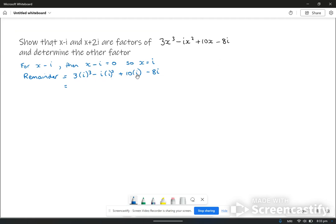That gives us this expression here. You can put this into your calculator if you like. I'm just going to do the bits in between. This is 3 times i to the power of 3.